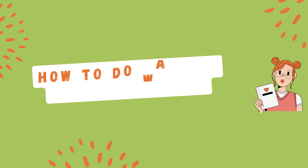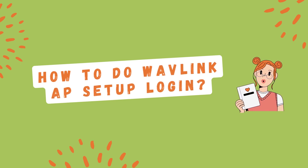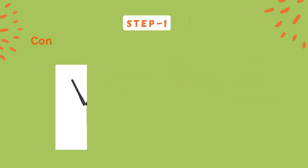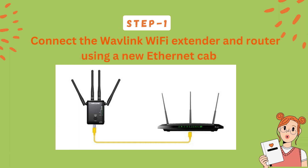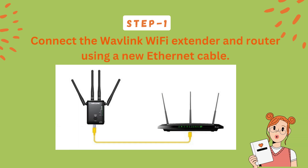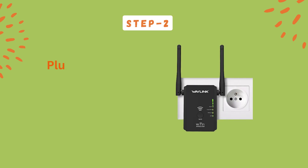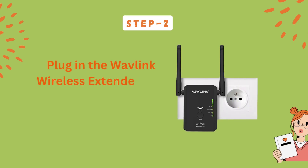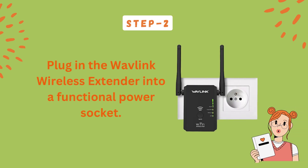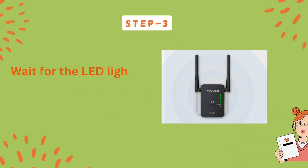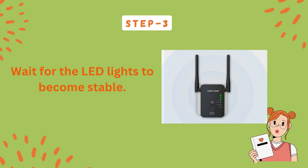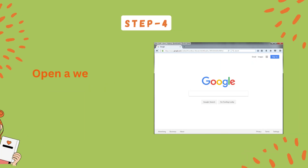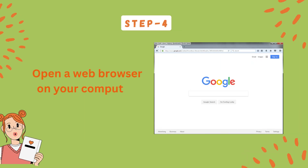How to do Wavelink AP setup login. Step 1: Connect the Wavelink Wi-Fi extender and router using a new Ethernet cable. Step 2: Plug in the Wavelink wireless extender into a functional power socket. Step 3: Wait for the LED lights to become stable.